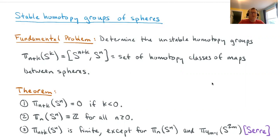A fundamental problem in algebraic topology is to determine the unstable homotopy groups, written π_{n+k}(S^k). It's the set of homotopy classes of maps from a sphere S^{n+k} into another sphere S^n. This indexing is a little bit funny and we'll see later why this makes sense.